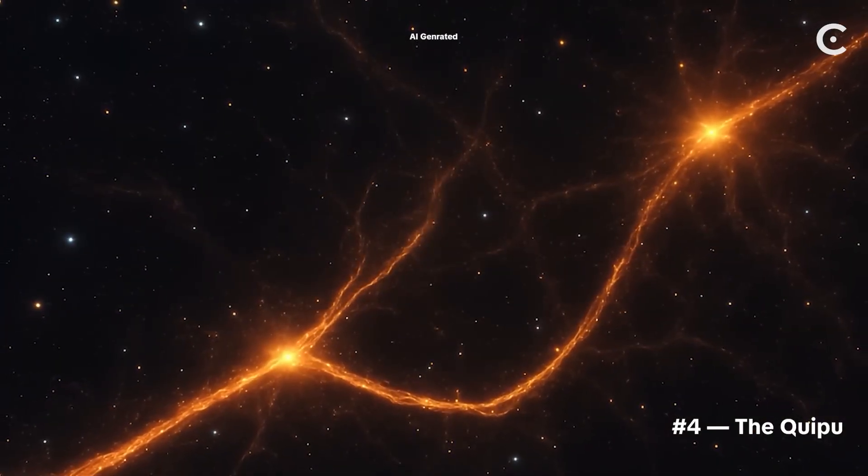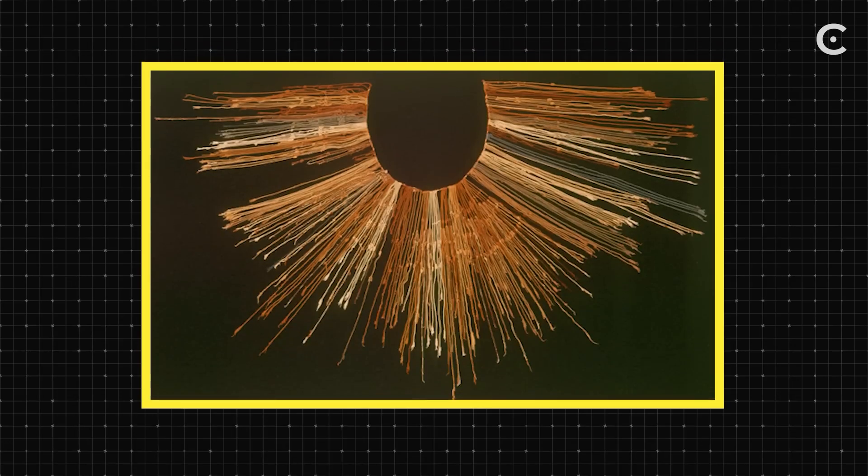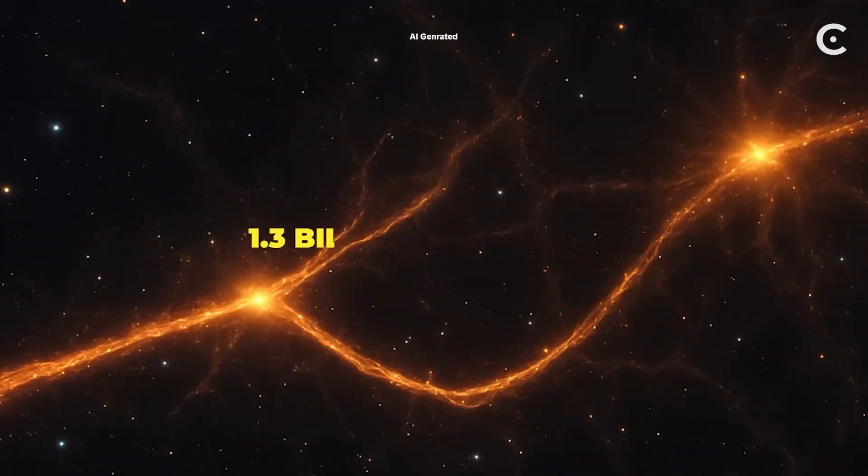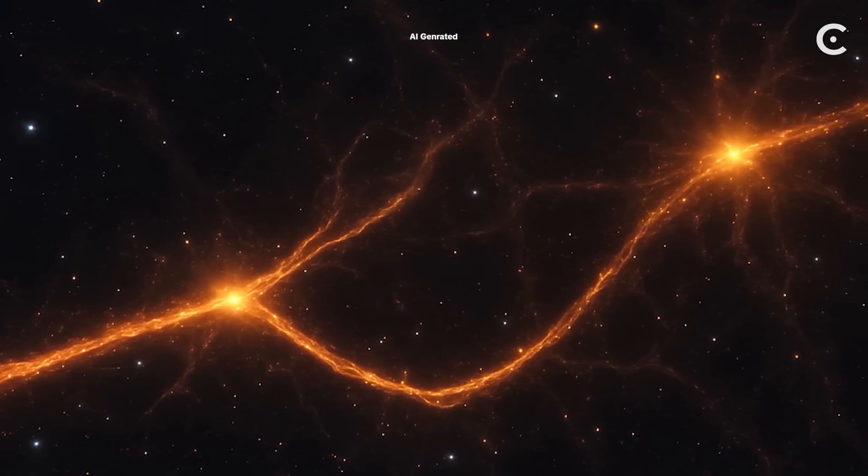Okay, this one's brand new, like published in 2024 new. It's called the Quipu, named after those ancient Incan knotted strings used for record keeping. And honestly, the name fits perfectly. Astronomers using X-ray data traced a branching, thread-like superstructure stretching over 1.3 billion light years. That's more than twice the size of Laniakea.